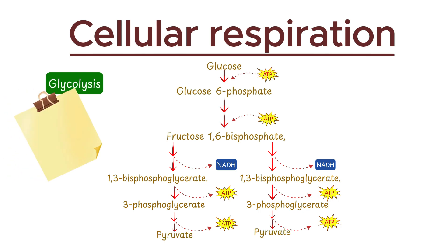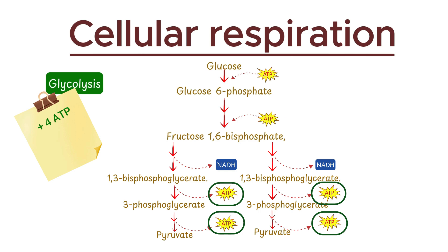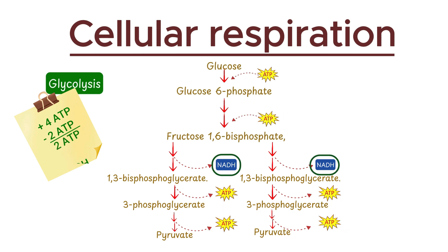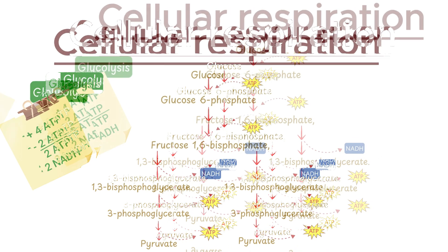Summarizing the energy yield: four ATP molecules are produced, but since we used two ATP molecules initially, the net gain from glycolysis is two ATP molecules. Additionally, two NADH molecules are produced during glycolysis. Now let's move on to the second stage, the Krebs cycle.